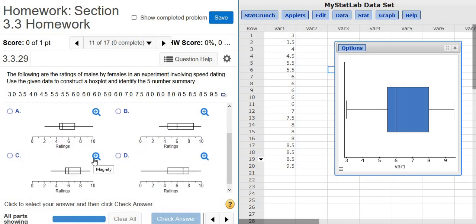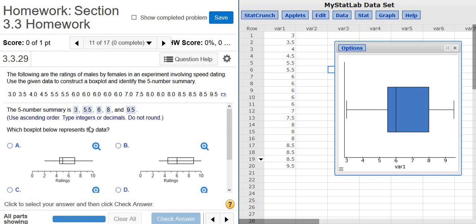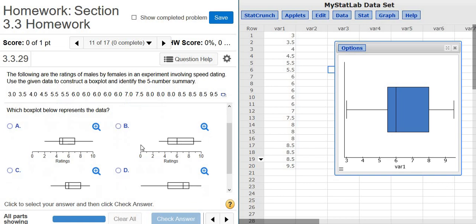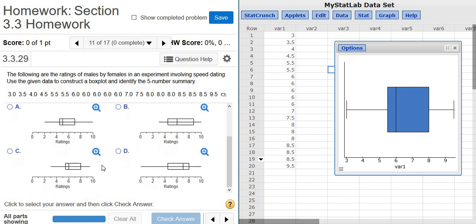So let's see. Let's line everything up carefully. So it starts, the minimum is at 3. And the maximum is at 9.5. So I think it's going to be just using matching. That's what we're using here. Looks like it's going to be this one here. I think it's going to be C.